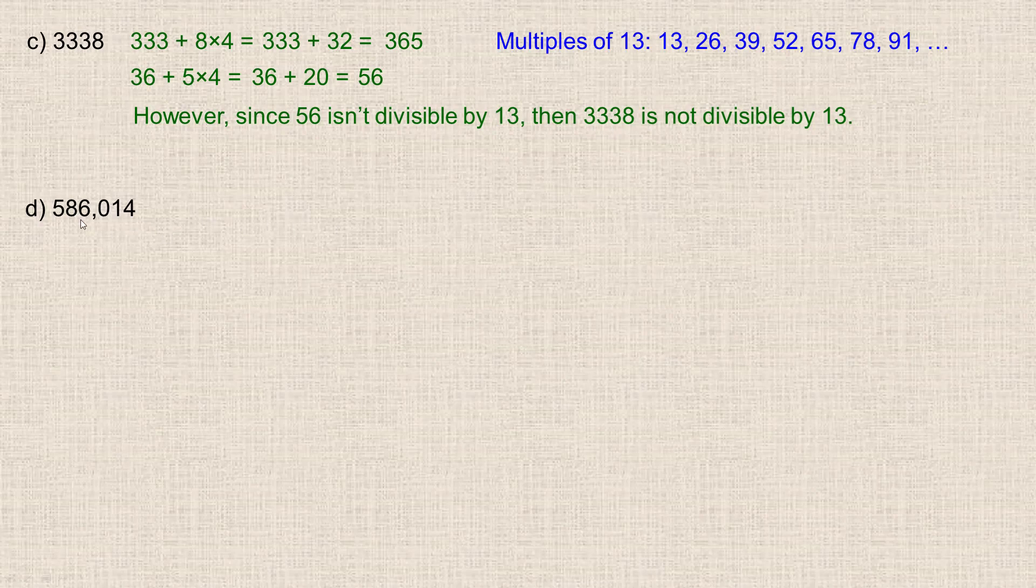And I want to do one more larger example. So here's 586,014. So we would take 58,601, and add to it 4 times the 4 digit, which is 16. So 1 and 16 adds to 17, so this is going to be 58,617.